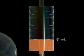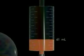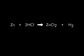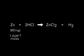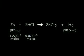When we use only half as much zinc, this time only 82 milligrams with the same amount of hydrochloric acid as before, the metal will react with the acid to yield 30.5 milliliters of hydrogen gas.